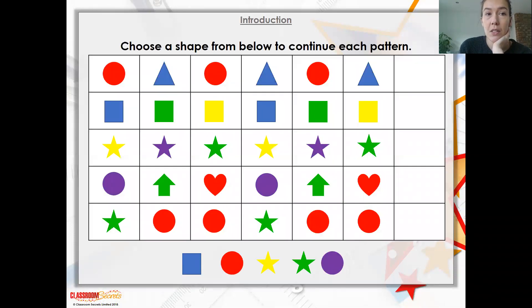So it says choose a shape below to continue each pattern. You're all pretty good at this. This is just a simple one to start off with. So all I'd say is just look at the shape, look at the colour, and decide which shape would fit in. You can pause me at the moment if you want to have a little go at this yourself.